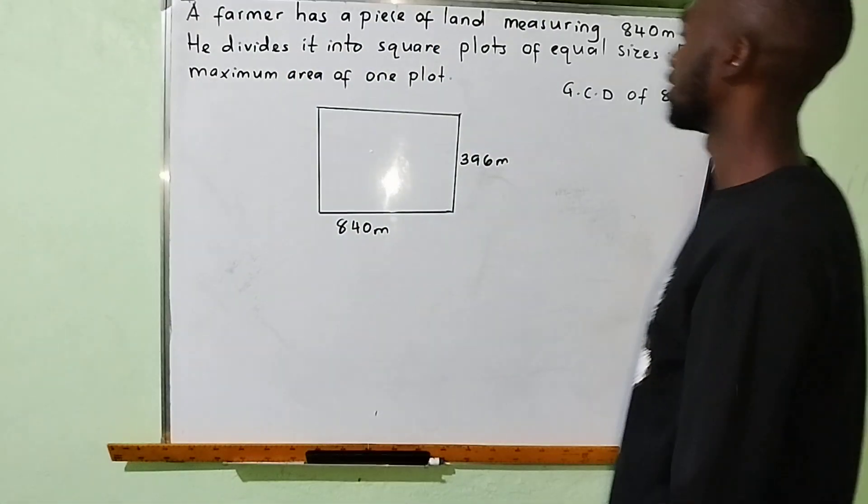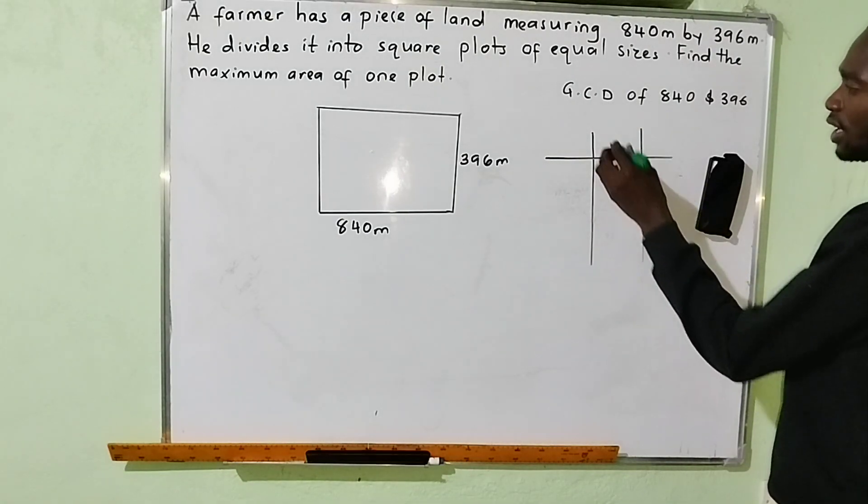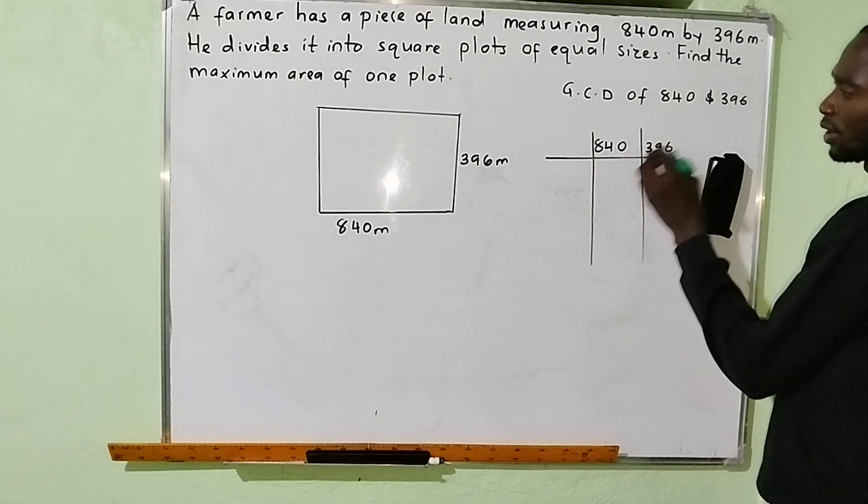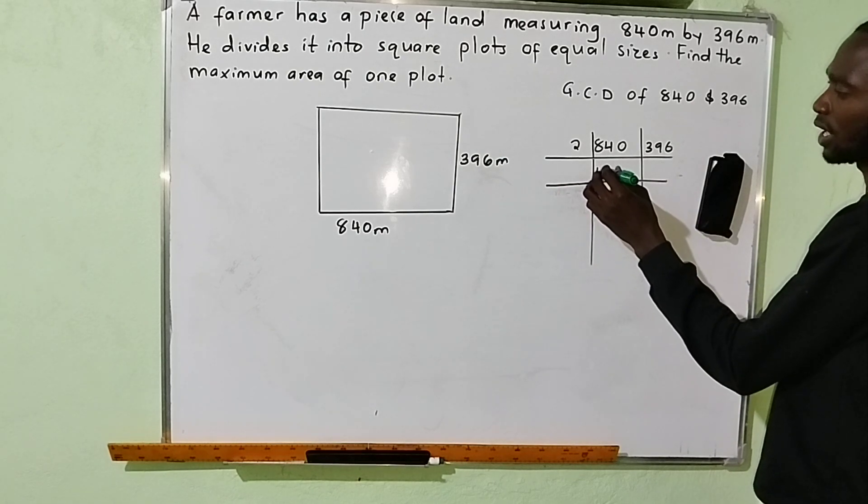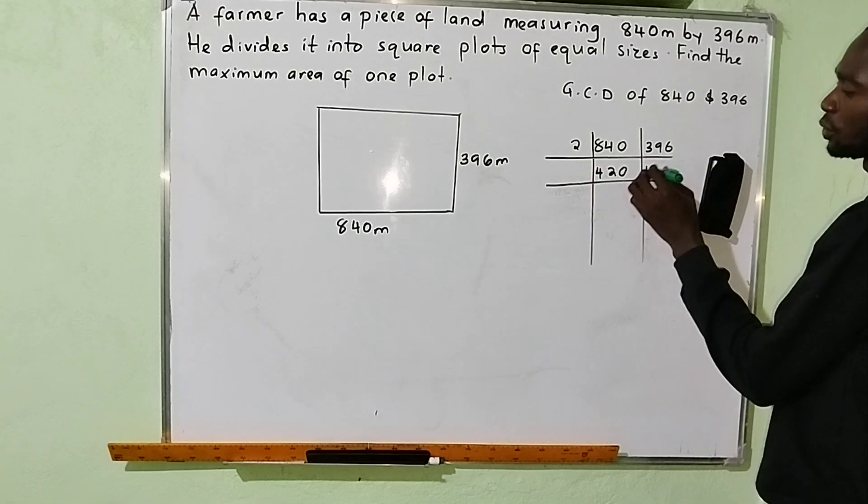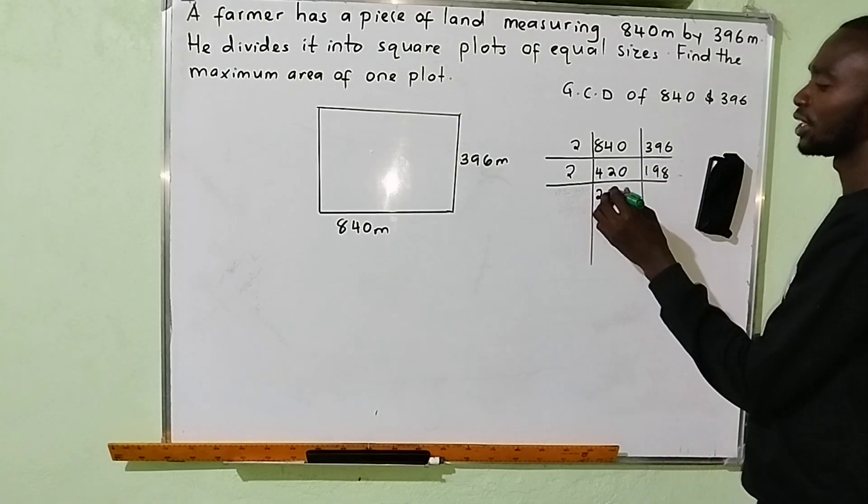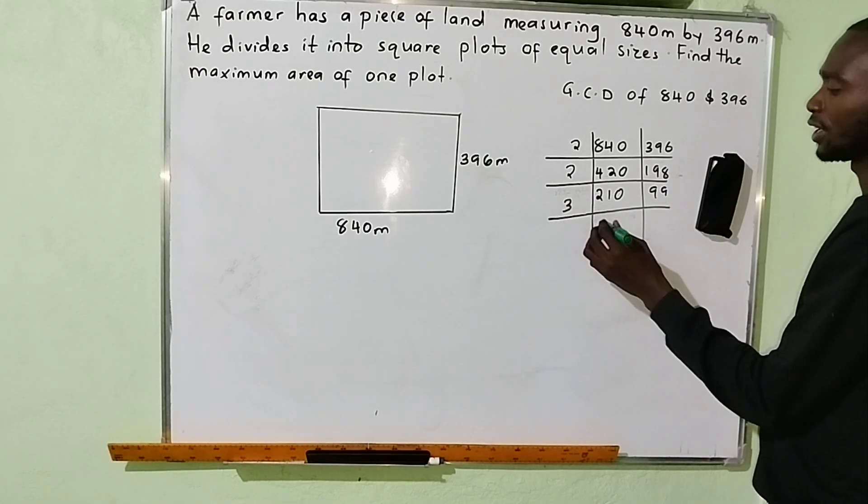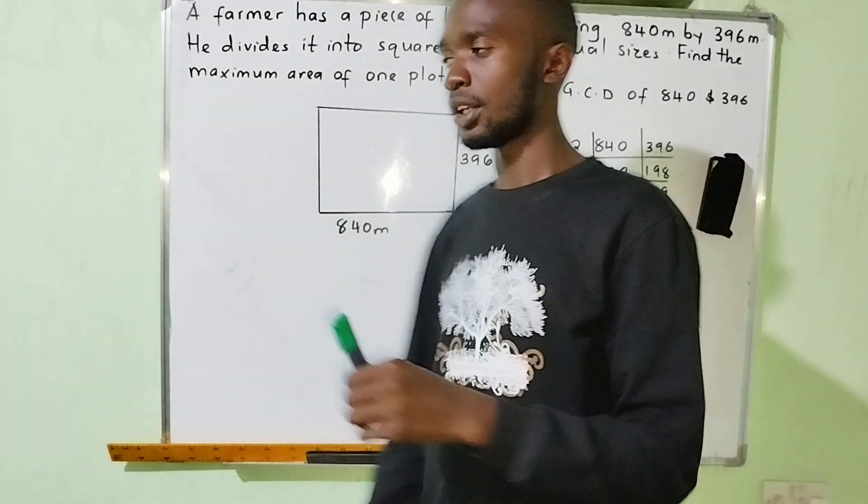The GCD of 840 and 396 is obtained like this: you have 840 and 396. You start by dividing by 2, which gives you 420 and 198. By 2 again: 210 and 99. By 3: 70 and 33. There is no other common divisor of 70 and 33.